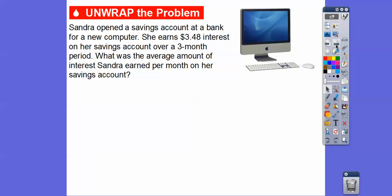Sandra opened a savings account at a bank for a new computer. She earns $3.48 interest on her savings account over a three-month period. What is the average amount of interest Sandra earned per month on the savings account? So here we're going to divide $3.48 divided by three.